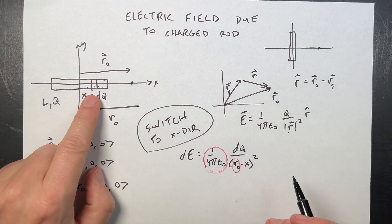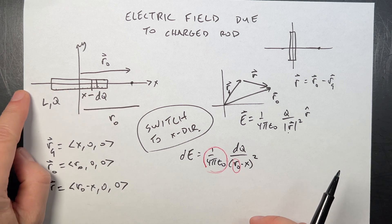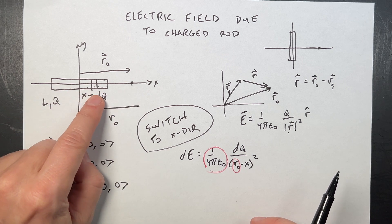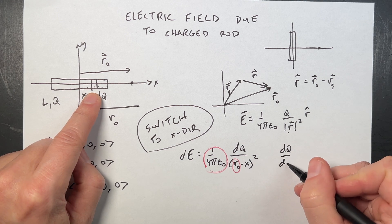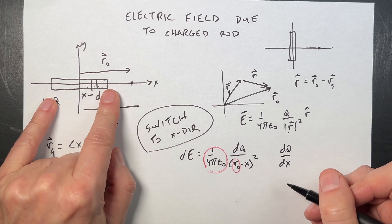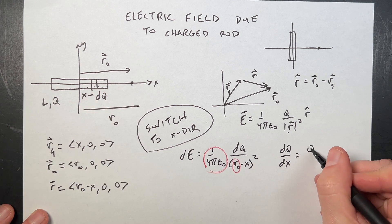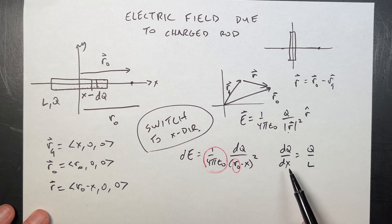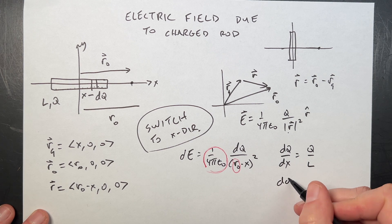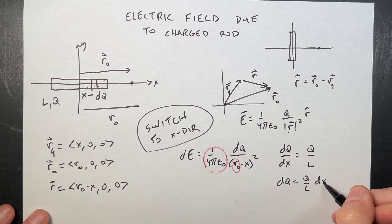Well, we can do that. If I assume a uniform charge density, then the charge per length of this, which would be dq over its length dx, is going to be the charge per length for this, q over L. So if I multiply both sides by dx, I get dq equals q over L dx. So now I can put that in right here.